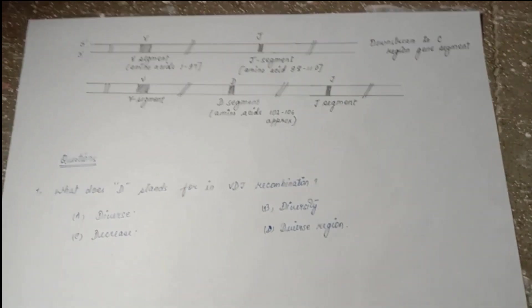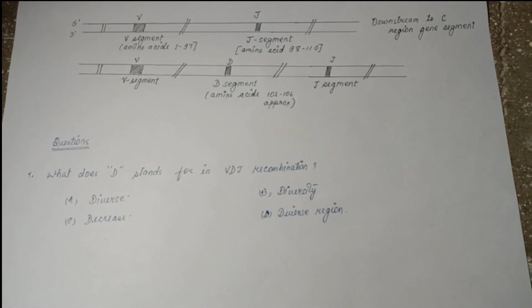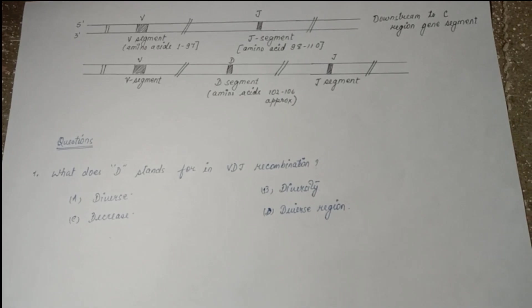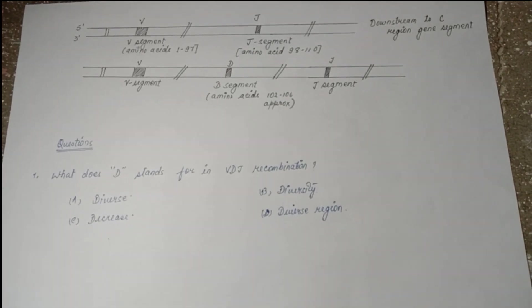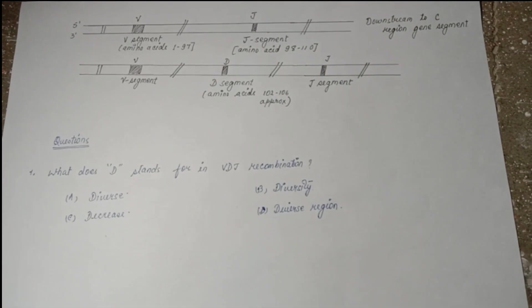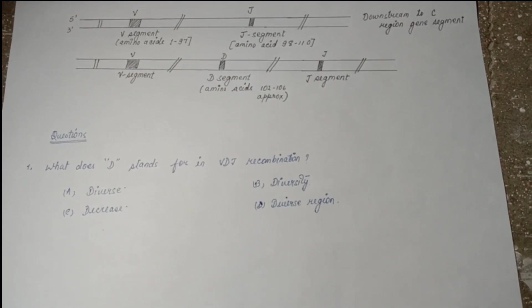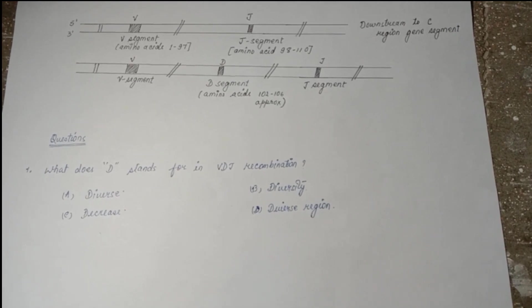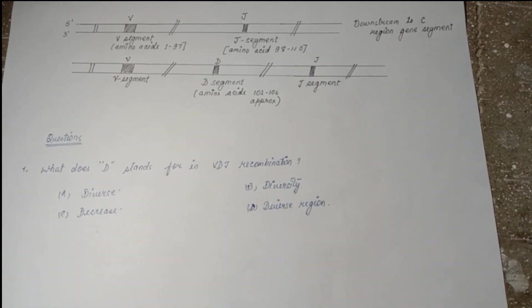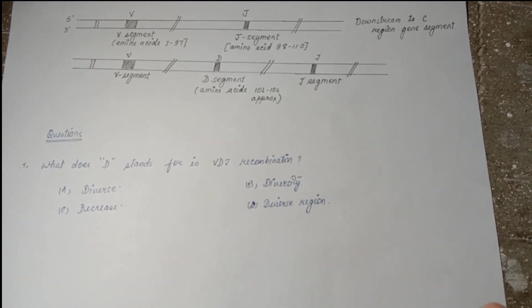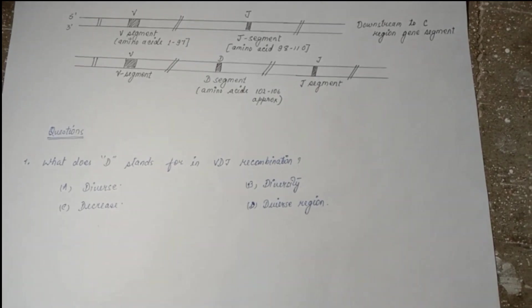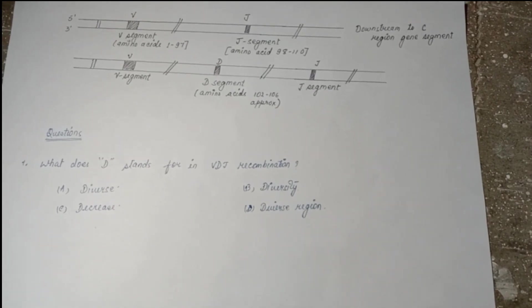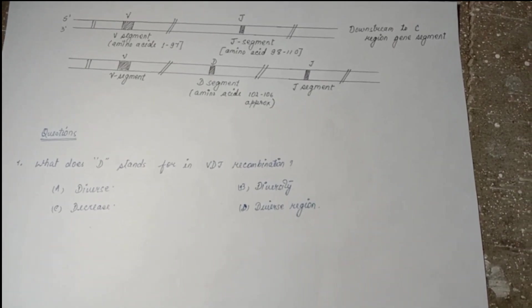About VDJ recombination, we will be learning in the next part. I'll be leaving you with one question: what does D stand for in VDJ recombination? I think it's very easy. I have told also in the video. You can see the options. Hopefully you can comment in the comment section below. This was all about the introduction for antibody diversity. In the next part, we'll cover up about how this VDJ recombination actually works. Thank you so much for your patient listening.